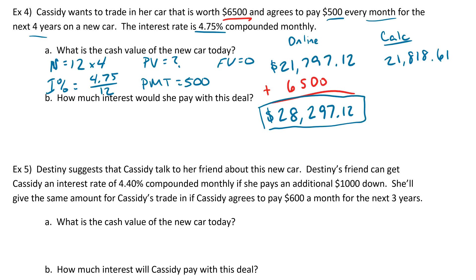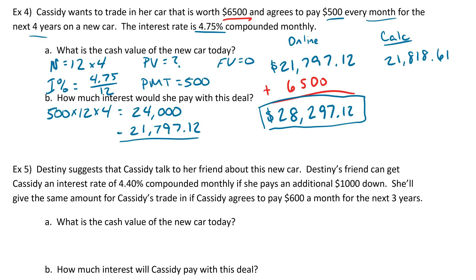For part B, how much interest would she pay with this deal? To find the total interest, we figure out how much she paid total: $500 per month times 12 times 4 years gives us $24,000. Then we subtract the amount that she financed, which is $21,797.12. That gives us $2,202.88 — that's how much interest she ended up spending on the car.